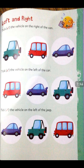Next set: tick the vehicle on the left of the car. The second one is a car, and you have to make a tick on the left of the car — left means the red color van. Next: tick the vehicle on the left of the jeep. In the center there is a jeep, and you have to tick the vehicle standing to the left of the jeep — that means the purple color car. Make a tick on the purple color car.